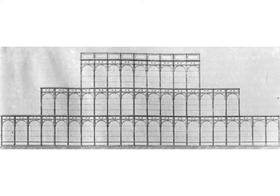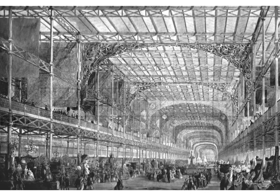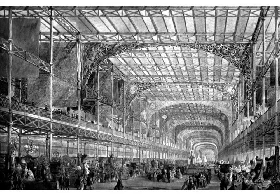One year after the completion of Labrouste's library, a brand new type of environment appeared in London. It too used the new technology of structural ironwork. It was called the Crystal Palace. The Crystal Palace was of a size and scale to compete with Boulay's architecture of sensations, but it was conceived in an altogether different spirit. Earlier on I talked about two different notions of transparency. Labrouste's library exhibited a kind of blind transparency, rather like speech, where the interior of a building is communicated but not literally seen on the outside. The Crystal Palace was transparent in the literal sense.